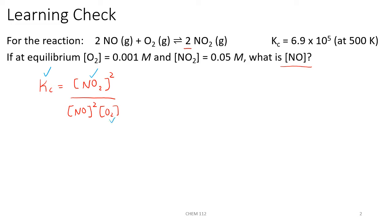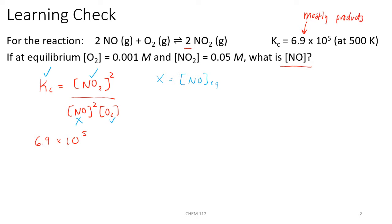So we should be able to rearrange to figure out what the missing NO concentration is. It's easiest to refer to our unknown as X, where X will equal the concentration of nitrogen monoxide at equilibrium. Our K sub C is 6.9 times 10 to the 5th, which is a large value. A large value means that at equilibrium, we'll have mostly products.